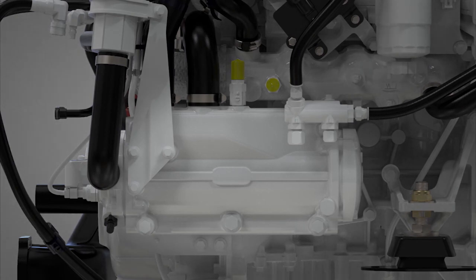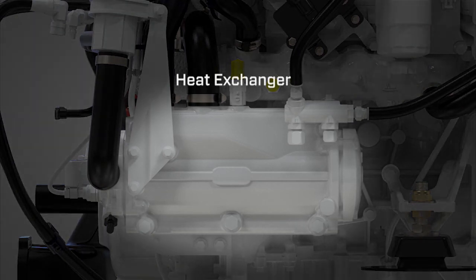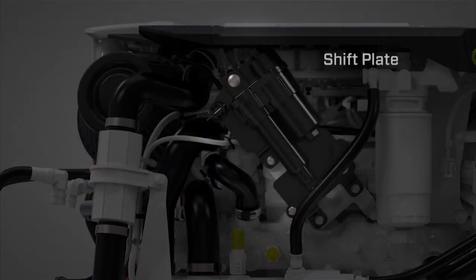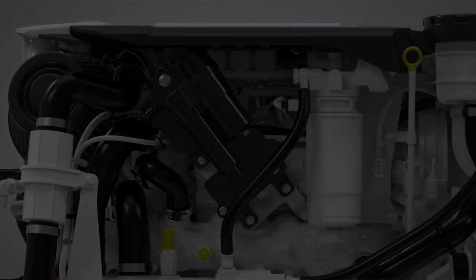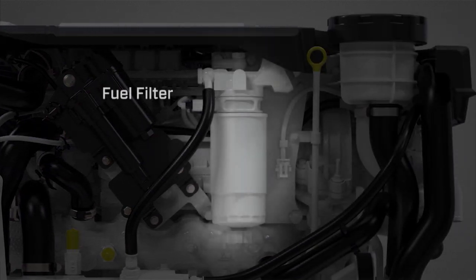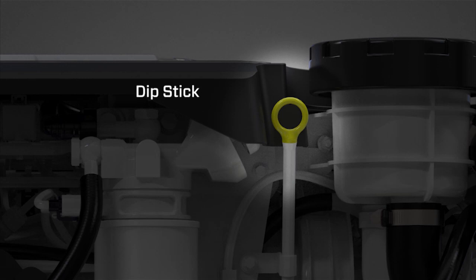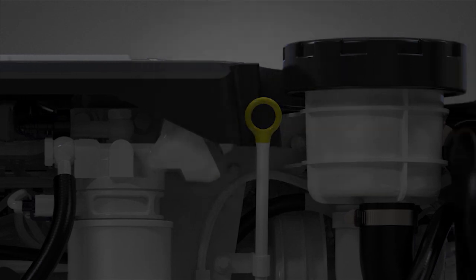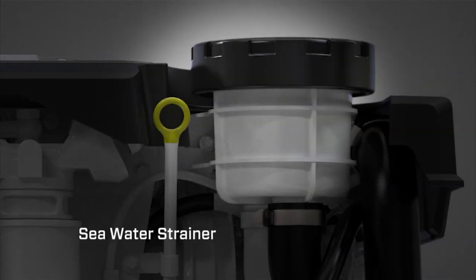Starboard side features include heat exchanger, shift plate, fuel filter, dipstick, and seawater strainer.